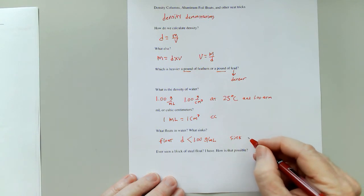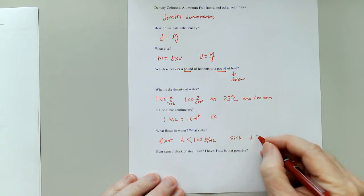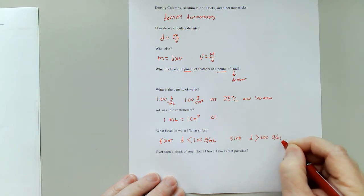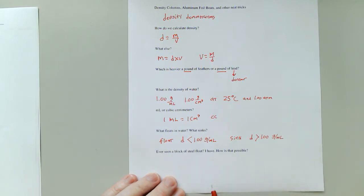And you sink if you're more dense than water, the density is greater than 1.00 grams per milliliter. And we can adjust a substance's volume to adjust its density. A steel block is not the same thing as a whole bunch of steel foil.